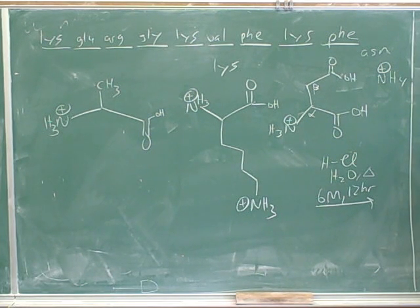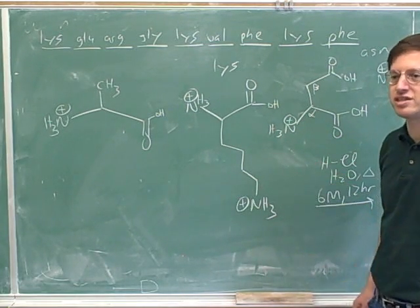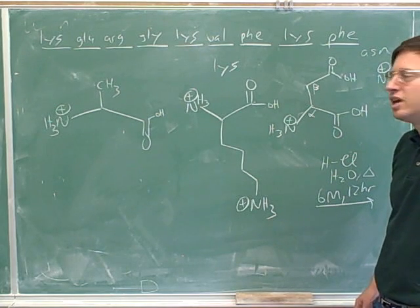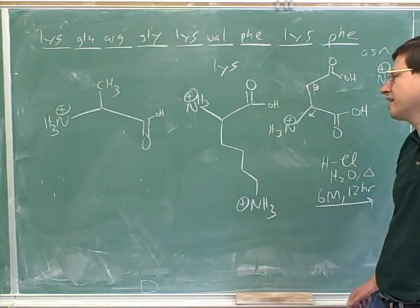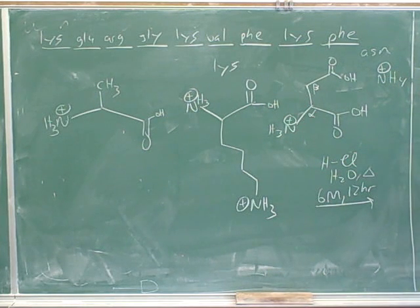And then because this is under acidic conditions, then we have to search out all of the amines and protonate them. Both the amines that were produced in the total acid hydrolysis and also the amines that were already existing before the hydrolysis. All the amines have to be protonated. We don't need to worry about protonating the carboxylic acids because they would already have been drawn as protonated naturally. But we have to find the amines and protonate those.